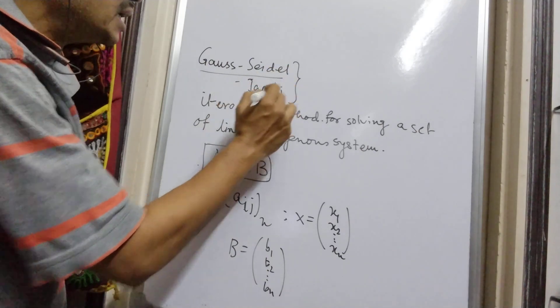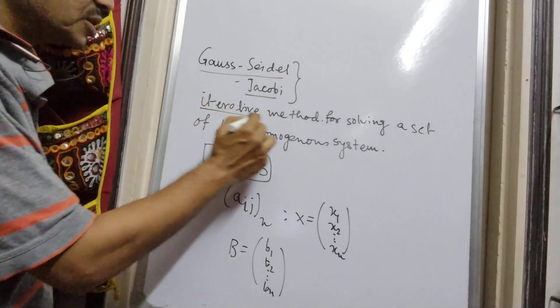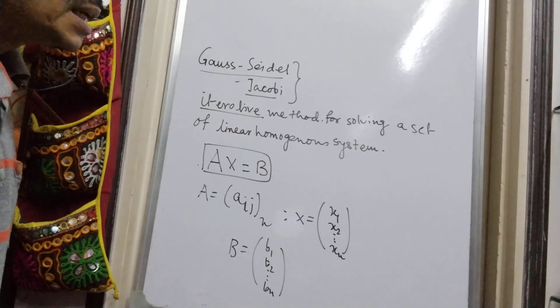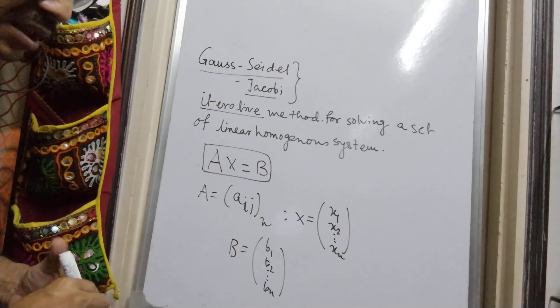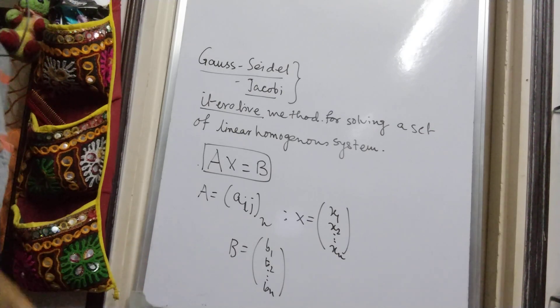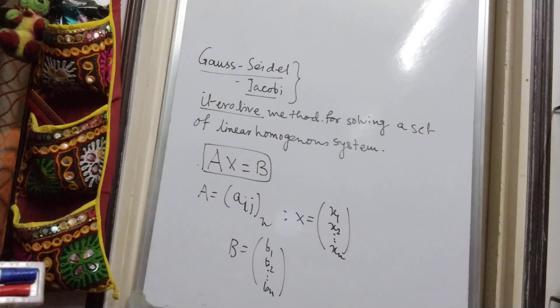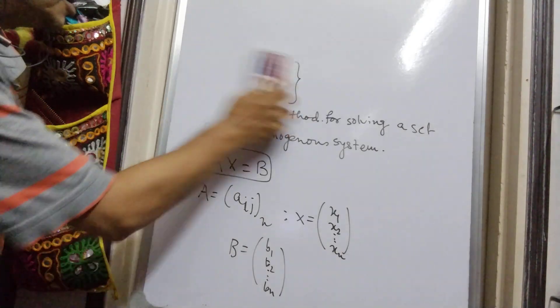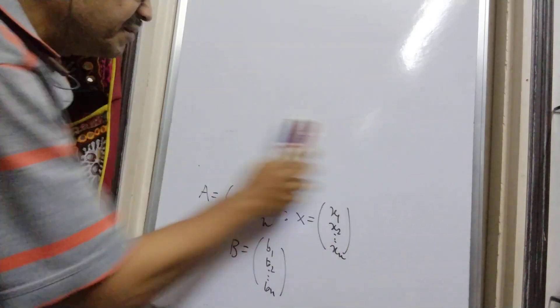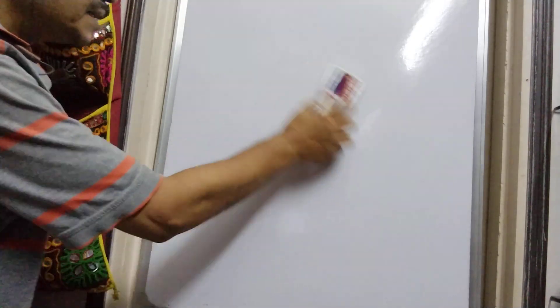Gauss-Seidel and Gauss-Jacobi are both iterative methods in the sense that we approximately assume an initial solution, which we develop by repetitively putting the value of the initial approximation back into the set of equations.